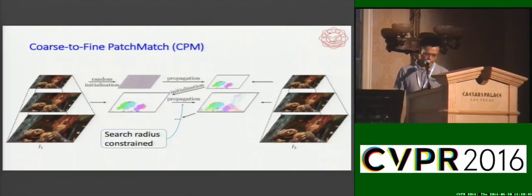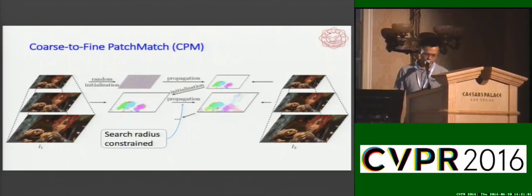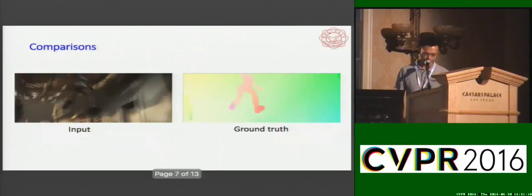On the top level, after random initialization of the state matching, the expansive search radius helps us find the rough global optimal initialization. In contrast, on the lower levels, a small search radius around the propagated matching is very helpful for avoiding poor local optima far from the propagated matching. Experiments show that this simple matching method is very effective for optical flow after interpolation.